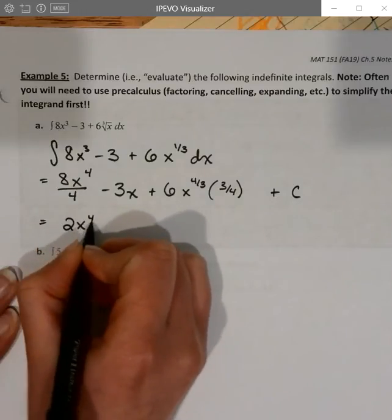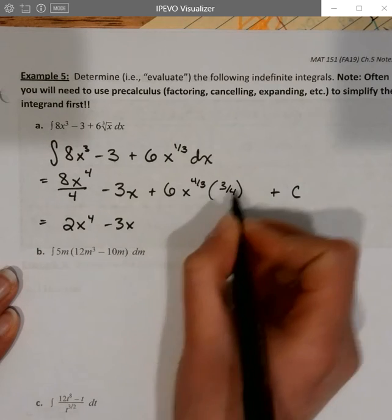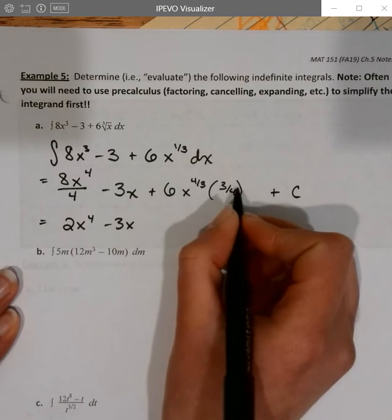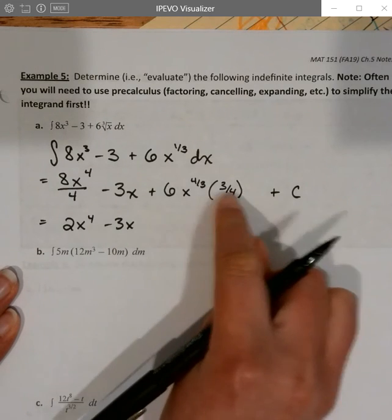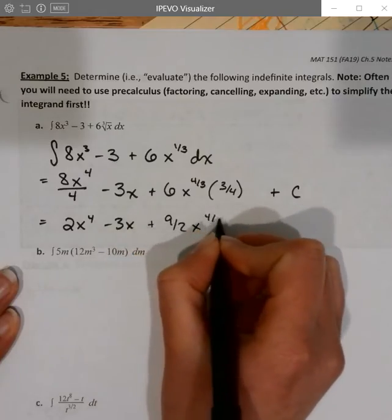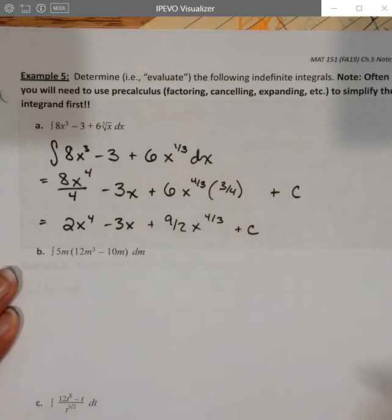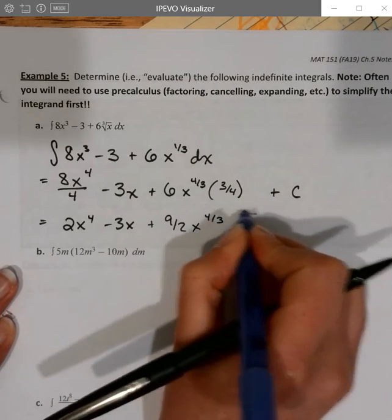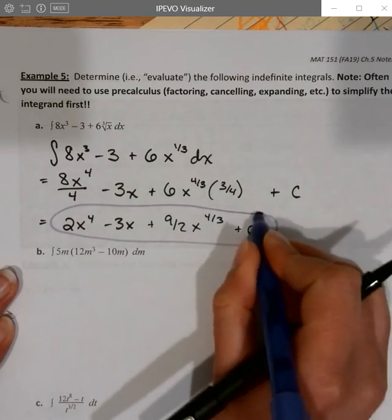That gives us 2x to the 4th minus 3x. This cleans up into 9 halves, and then the x to the 4 3rds plus c. And so now we have our finished indefinite integral for this one.